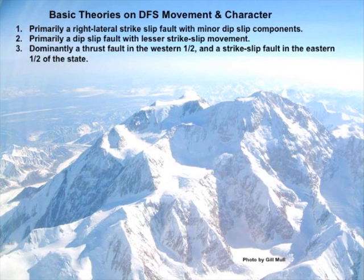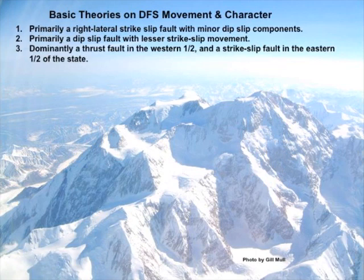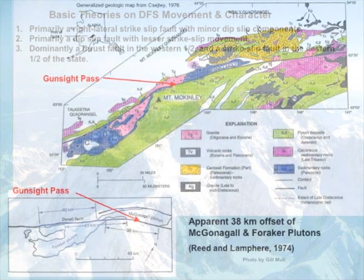To sum up the various theories, there are about three. One, which you've heard already, is primarily a right-lateral strike-slip with minor dip-slip components. Another might be primarily a dip-slip fault with lesser strike-slip movement, though not many adhere to that anymore. My story today is that it's predominantly a thrust fault in the western half and a strike-slip fault in the eastern half of the state.